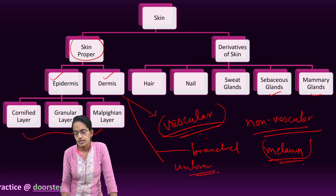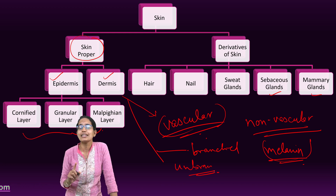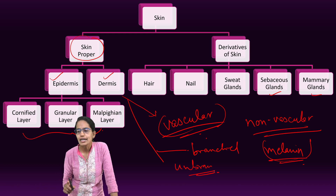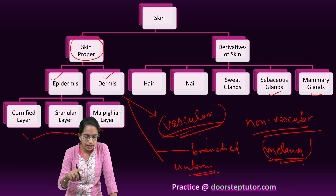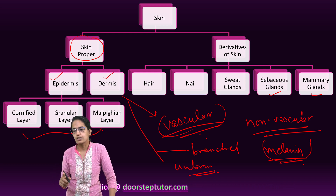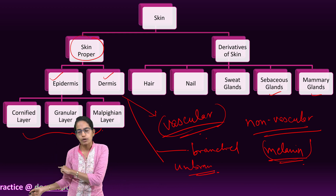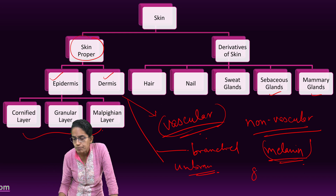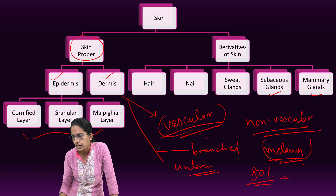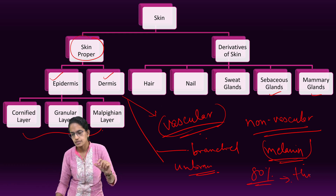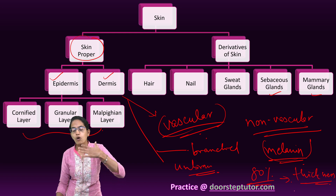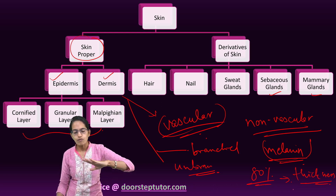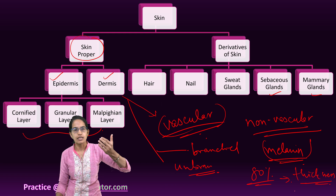Dermis is the layer where blood capillaries and sensory corpuscles are found. That means it is sensitive to touch, sensitive to heat, and sensitive to pain. This is the layer through which sensations or signals go to the brain. About 80% of its function occurs in the thickness maintained by the dermis, and it helps attach the underlying organs that are present.